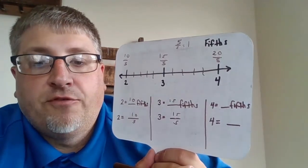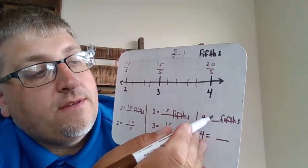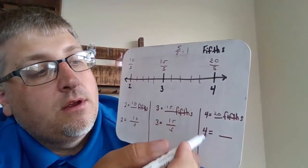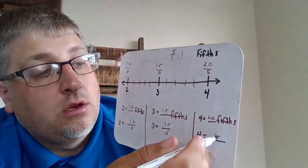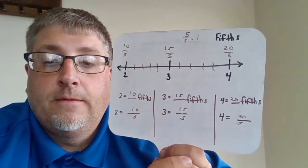And then our last problem for four. Four equals how many fifths? We know that's going to be twenty fifths. And that fraction will be written 20/5.